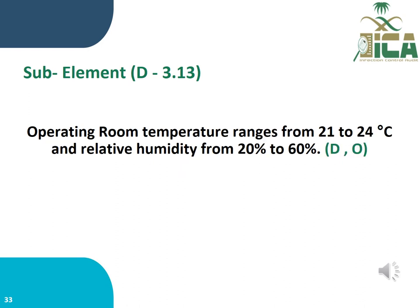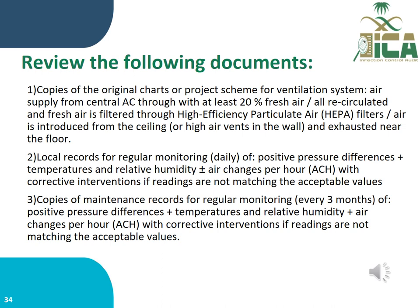Sub-element D3.13: Operating room temperature ranges from 21 to 24°C and relative humidity from 20% to 60%, done by documentation and observation. Review the following documents: (1) copies of the original ventilation system project charts — air supply from central AC with at least 20% fresh air, recirculated and filtered through HEPA filters; air introduced from the ceiling or high wall vents and exhausted near the floor; (2) local records for regular daily monitoring of positive pressure difference, temperature, and relative humidity; (3) air changes per hour (ACH) with corrective intervention if readings are outside acceptable values.